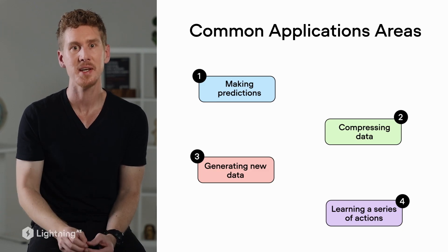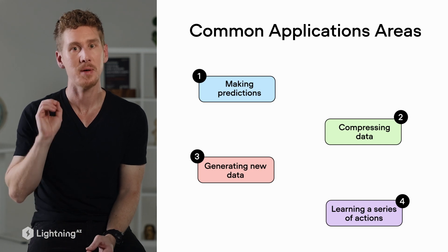So in this video, we learned the four broad application areas of machine learning: making predictions, compressing data, generating new data, and learning a series of actions. Since this is such a broad field, we will focus on the most popular application area — making predictions — which will be the core focus of this course. But before we zoom in on that subfield, let's also take a look at the three classic categories of machine learning, as that's useful terminology to have in your tool belt.